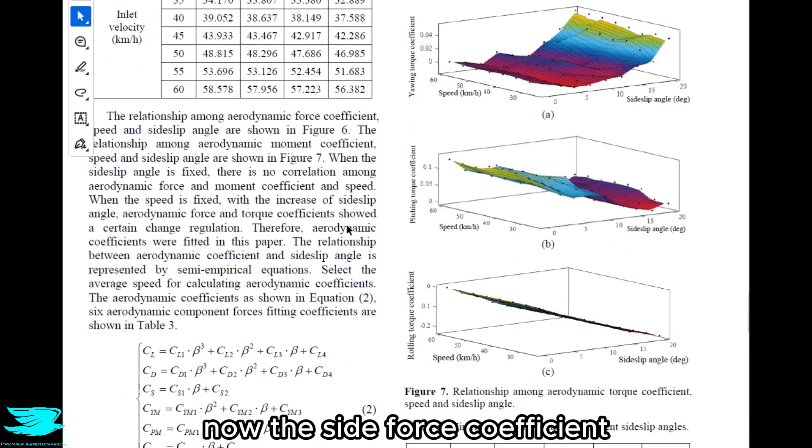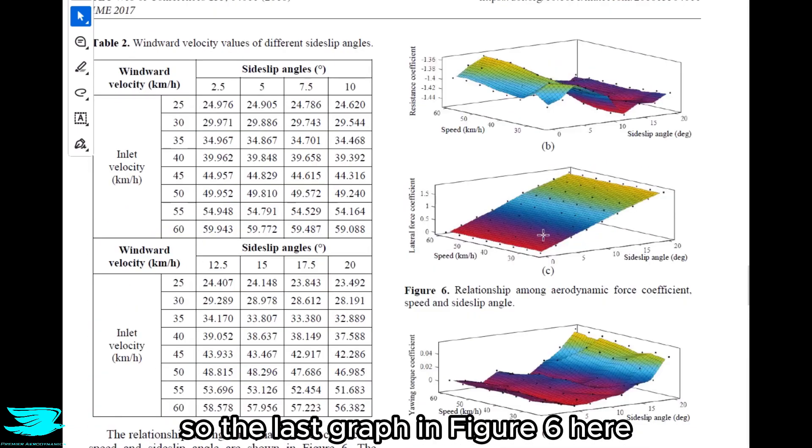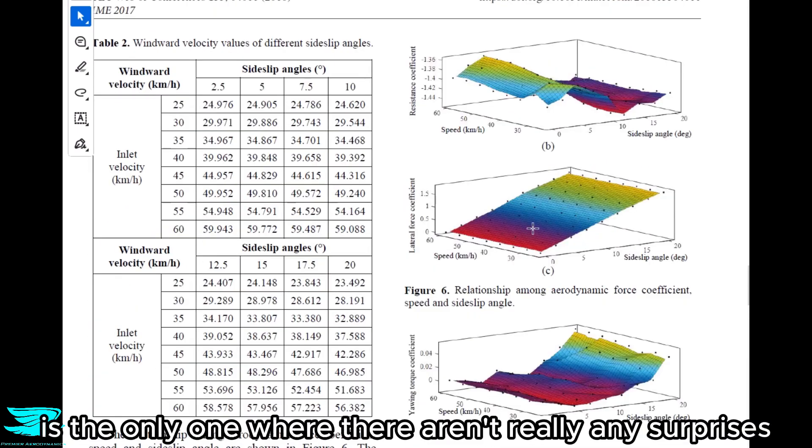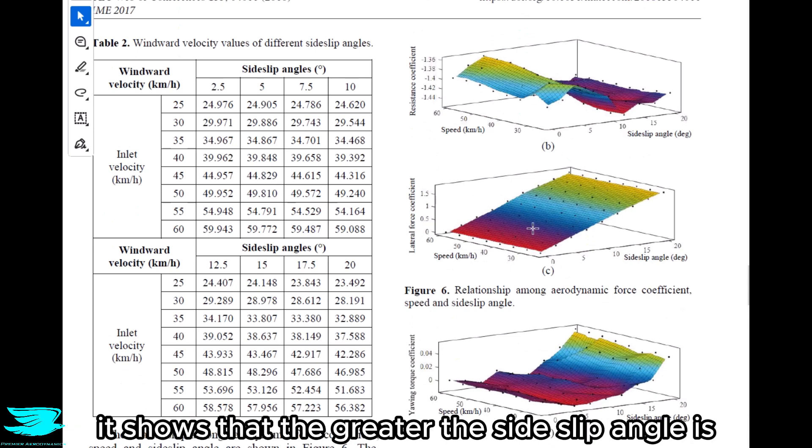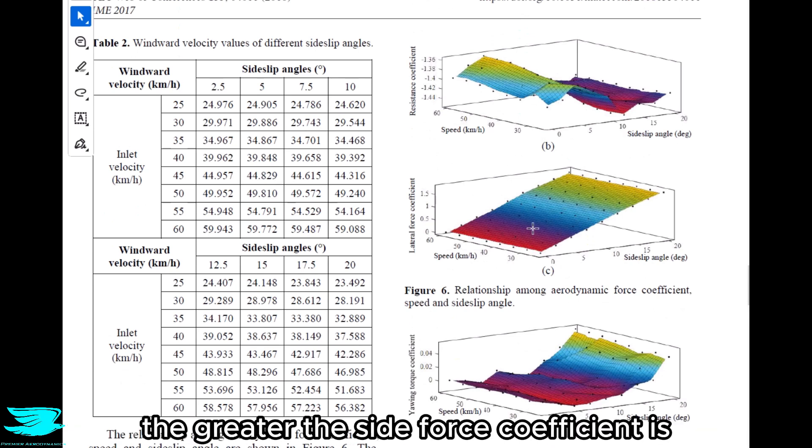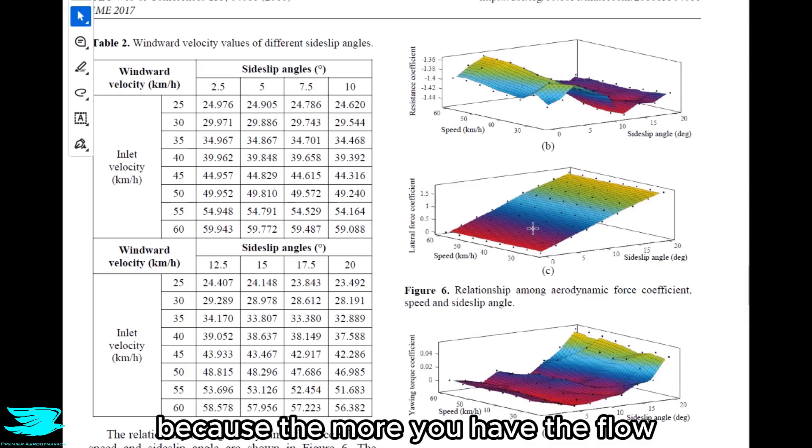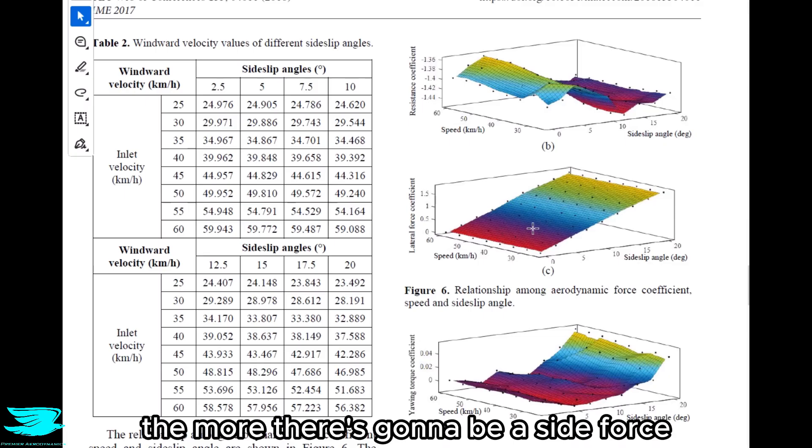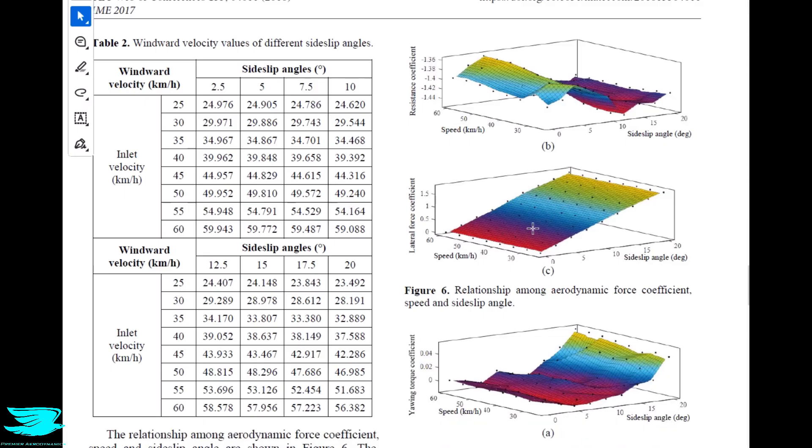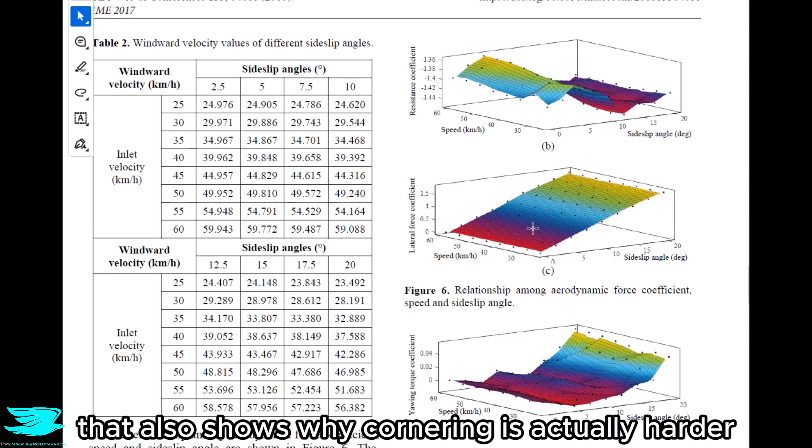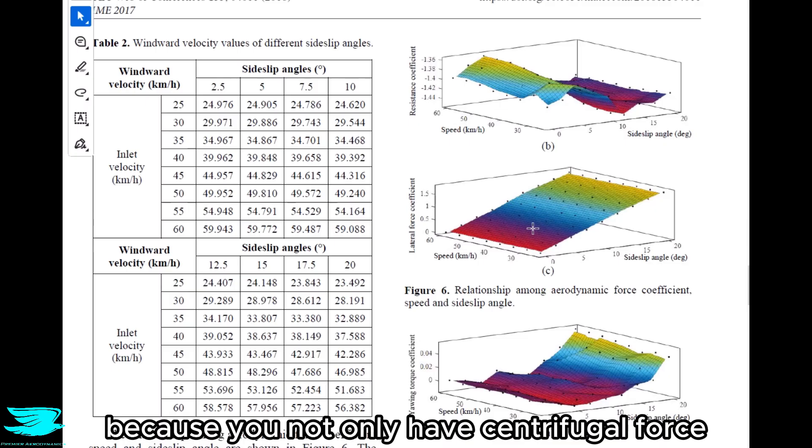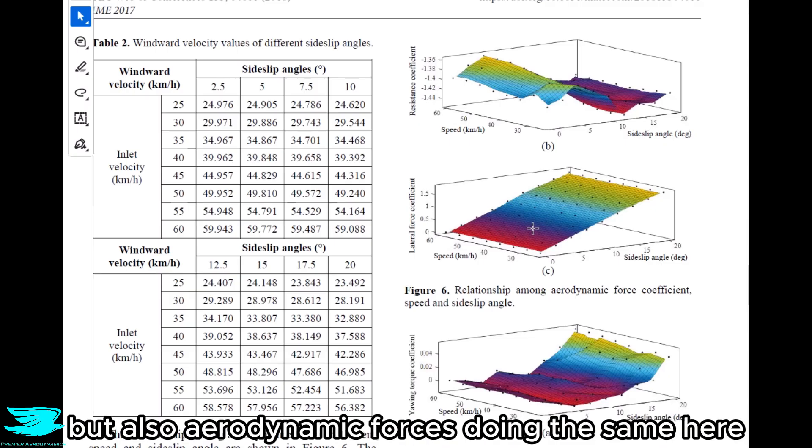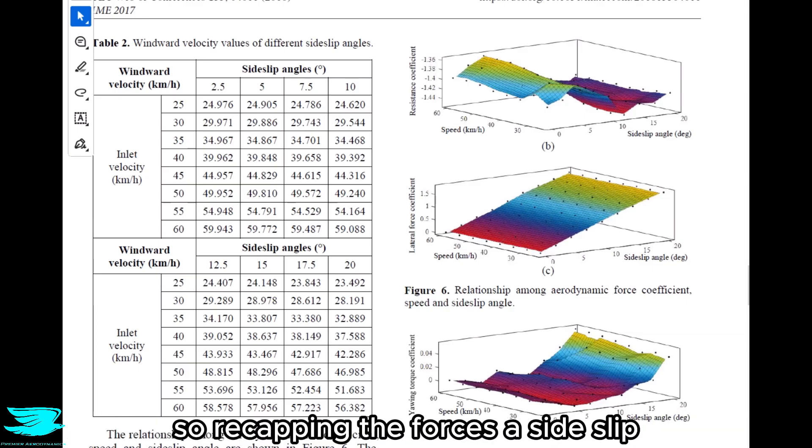Now the side force coefficient, so the last graph in figure 6 here, is the only one where there aren't really any surprises. It shows that the greater the side-slip angle is, the greater the side force coefficient is. And that makes a lot of sense because the more you have the flow hitting the side of your car and pushing it sideways, the more there's going to be a side force. That also shows why cornering is actually harder because you don't have centrifugal force throwing you out, but also aerodynamic forces doing the same here.